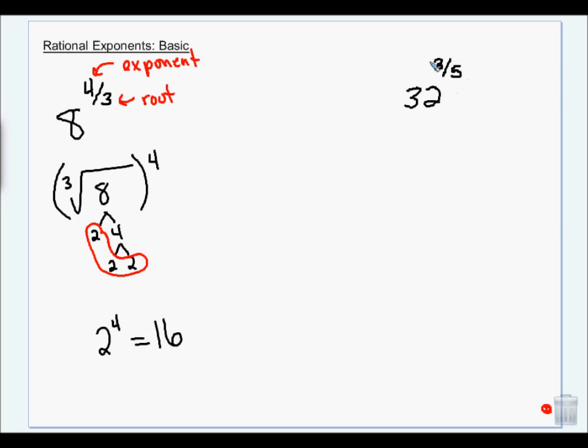Here I have the fifth root of 32 to the third essentially. So the fifth root of 32 to the third, denominator numerator.